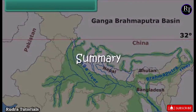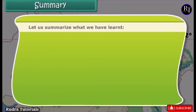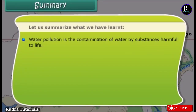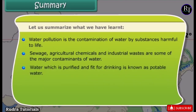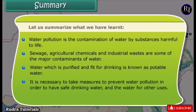Summary. Let us summarize what we have learned. Water pollution is the contamination of water by substances harmful to life. Sewage, agricultural chemicals and industrial wastes are some of the major contaminants of water. Water which is purified and fit for drinking is known as potable water. It is necessary to take measures to prevent water pollution in order to have safe drinking water and water for other uses.